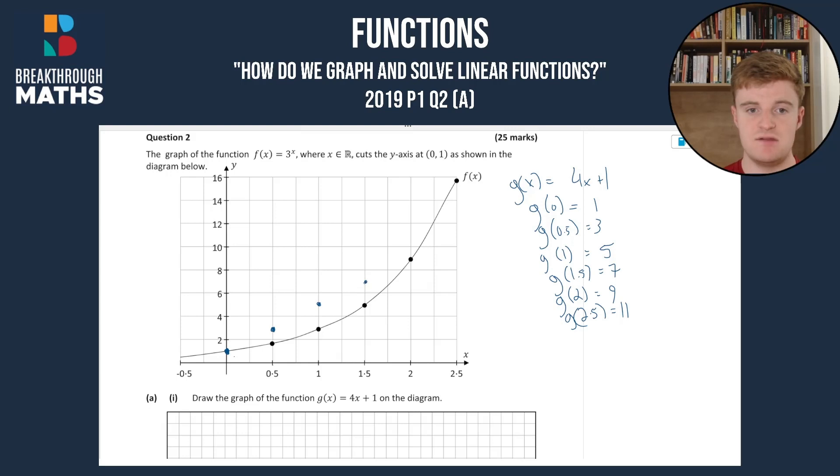(1.5, 7). (2, 9), we're going to intersect with f(x) once again. And then (2.5, 11). And once you've plotted your points, you're going to take out your ruler and draw a nice straight line through them.